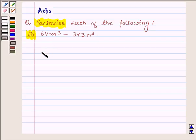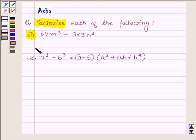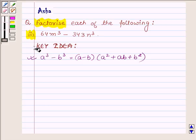First, let us learn that a³ - b³ is equal to (a - b)(a² + ab + b²). This identity is our key idea that we are going to use in this problem to factorize it.